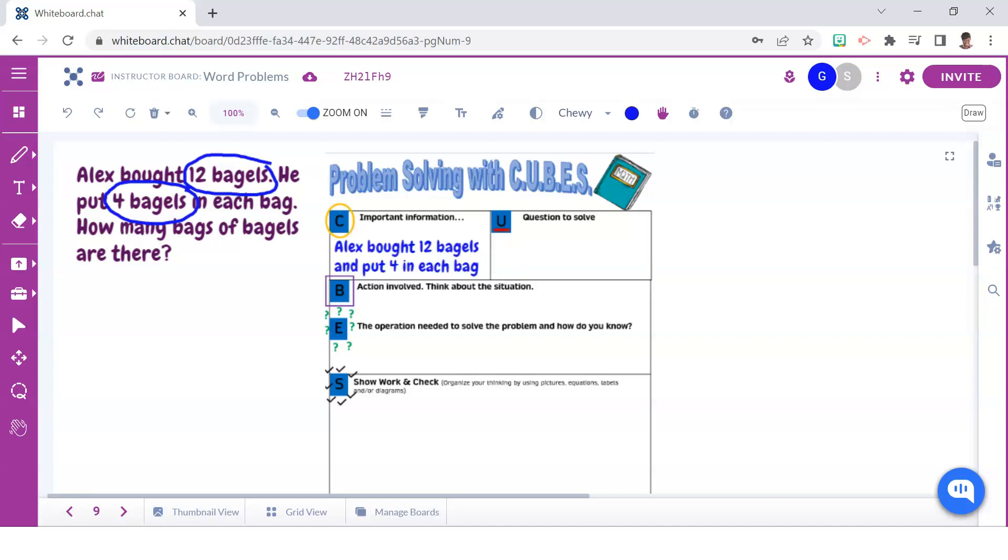The next step in the CUBE strategy has us identify the question by underlining it, and the question can be written right here in the Use section.